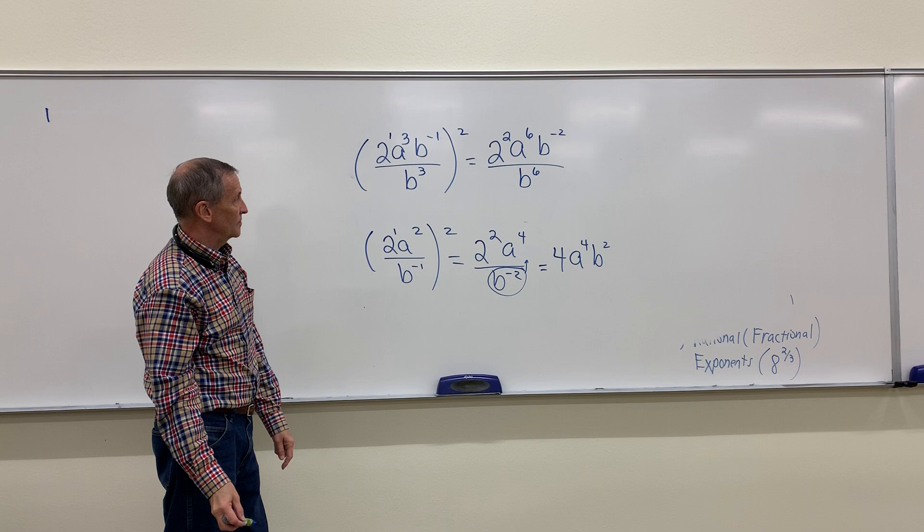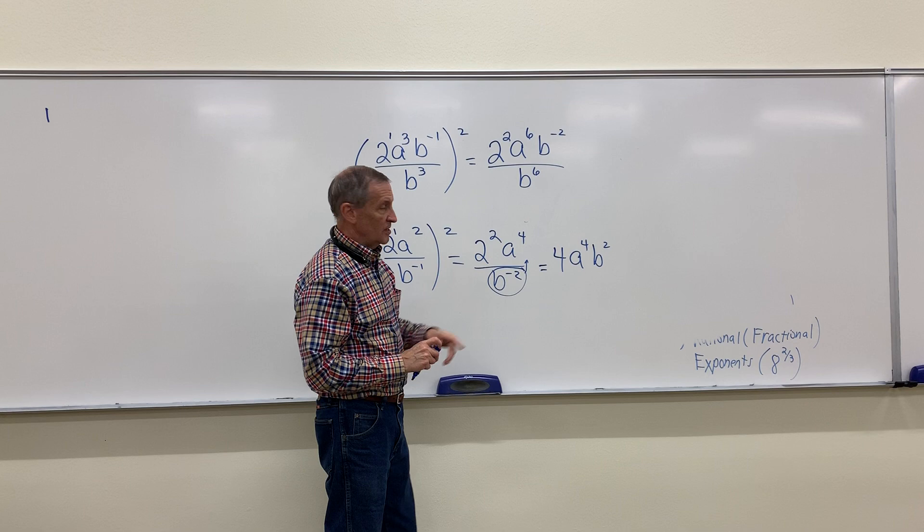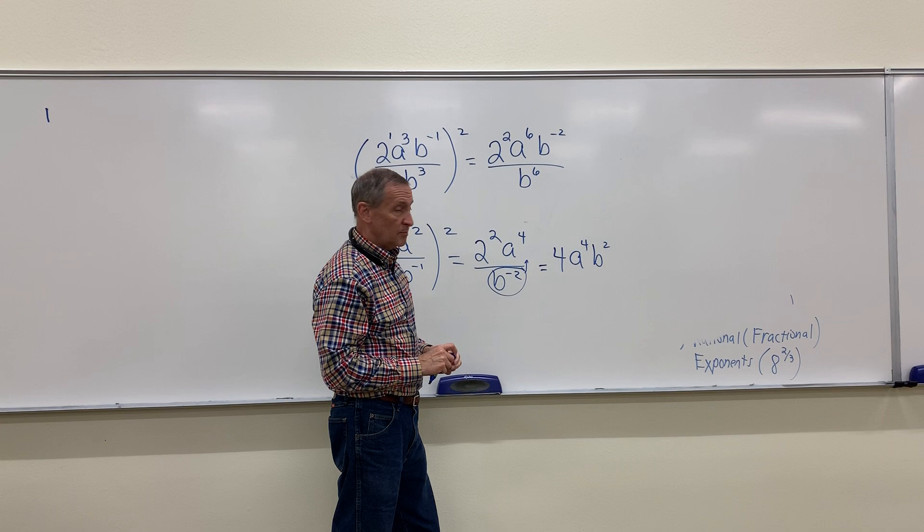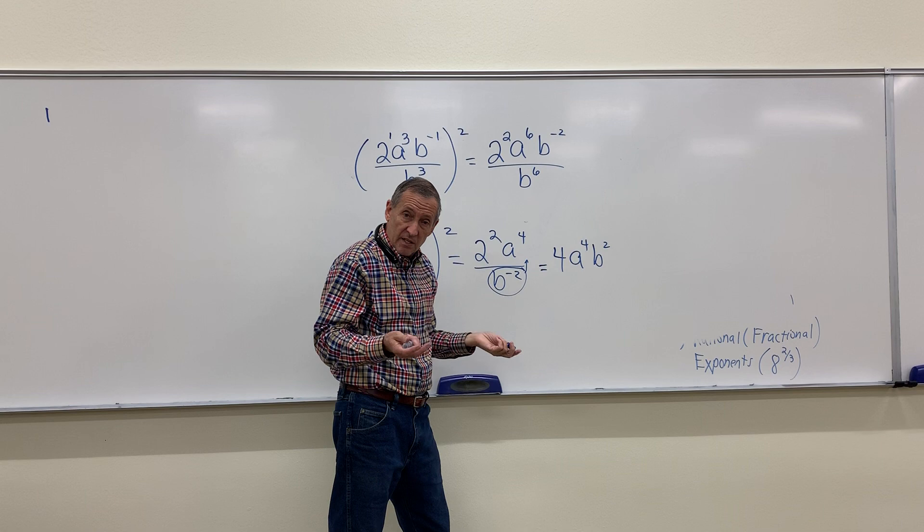Hey, I got two reasons this thing is not simplified. The first reason is I have a negative exponent, right? But there's another reason it's not completely simplified. And that's because I have b's in both the numerator and the denominator. I need to combine them. And we can basically do this in one step.